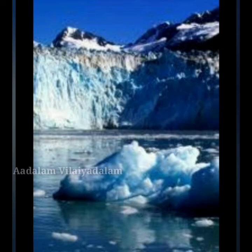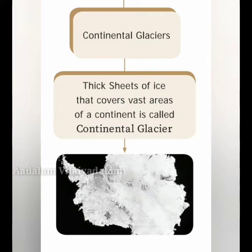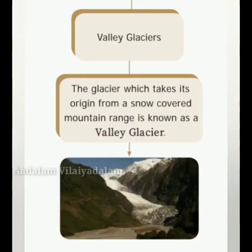Glaciers are broadly divided into two types based on their place of occurrence: continental glaciers and valley glaciers. Thick sheets of ice that cover a vast area of a continent are called continental glaciers. Glaciers that take their origin from snow-covered mountain ranges are called valley glaciers.